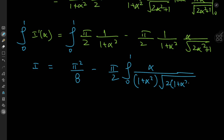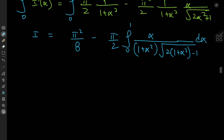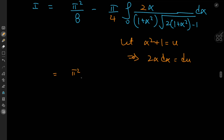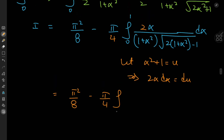We rewrite 2α²+1 as 2(α²+1) − 1, then introduce the substitution u = α²+1, so that 2α dα = du. The limits transform: as α → 0, u → 1; as α → 1, u → 2. We get π²/8 minus π/4 times the integral from 1 to 2 of du / (u · √(2u−1)).